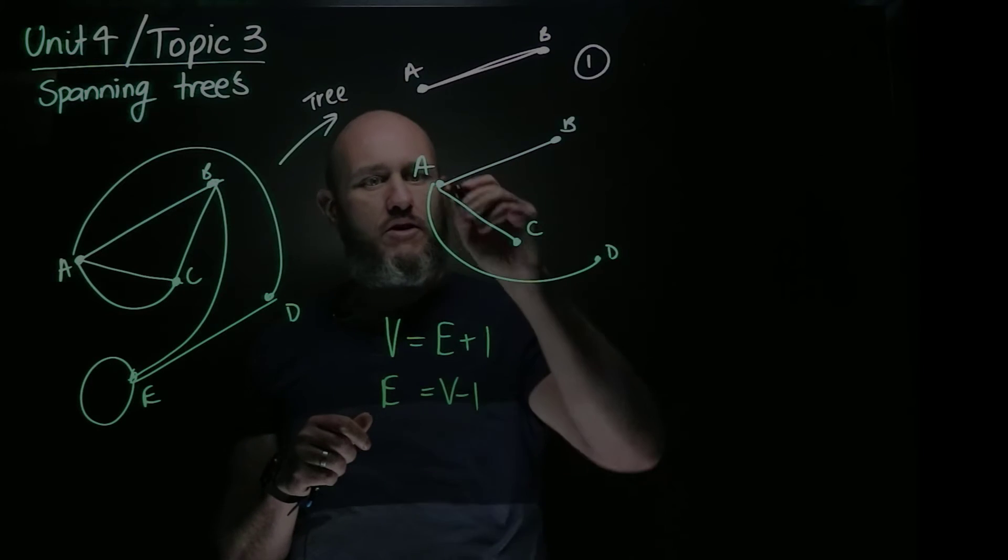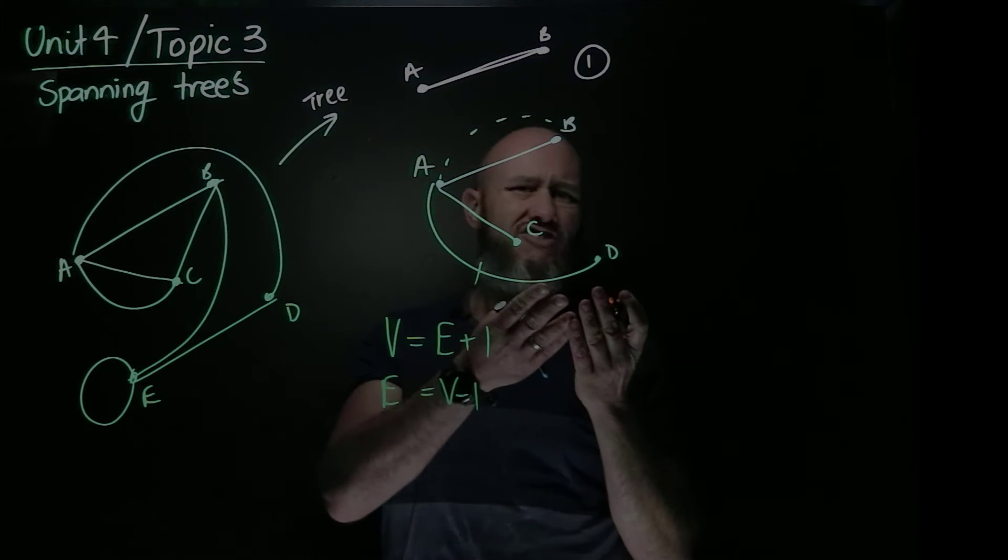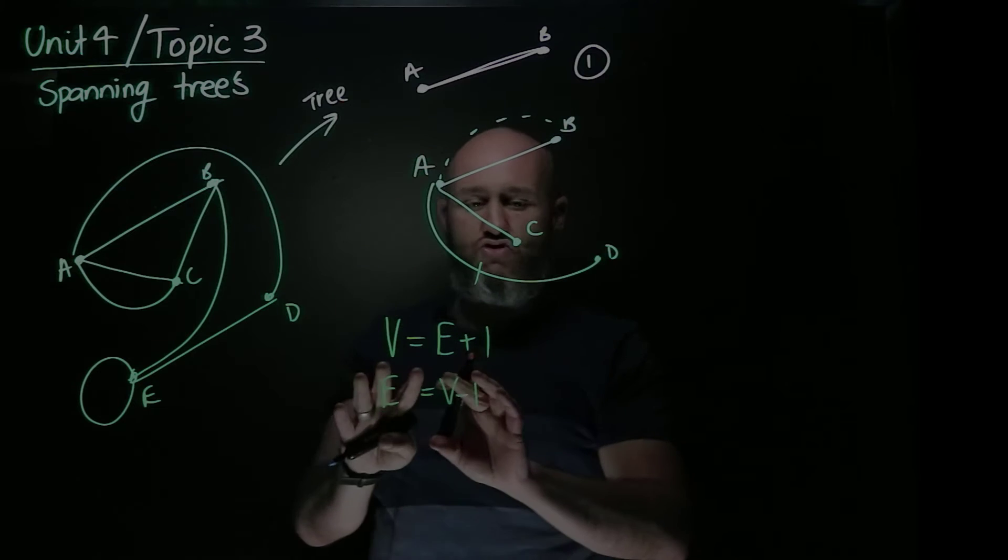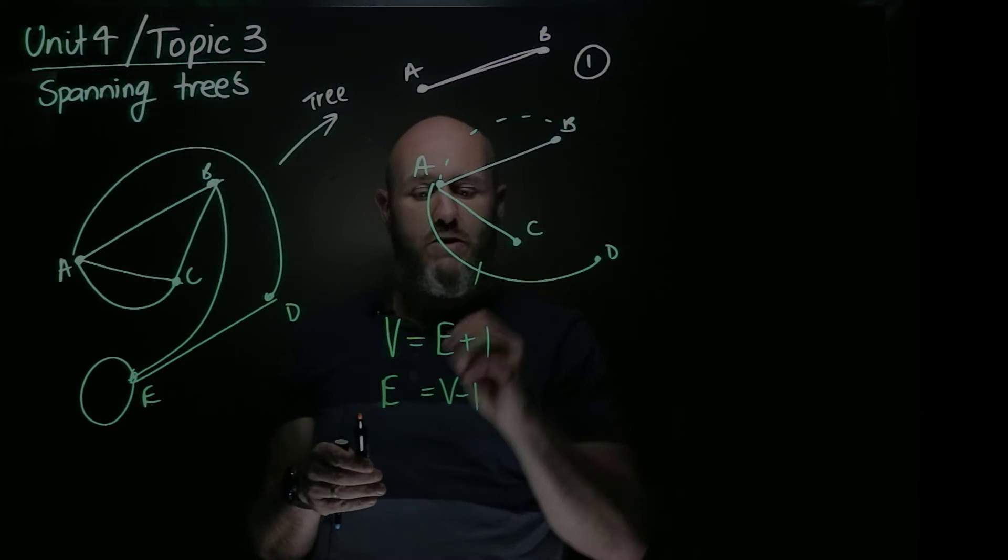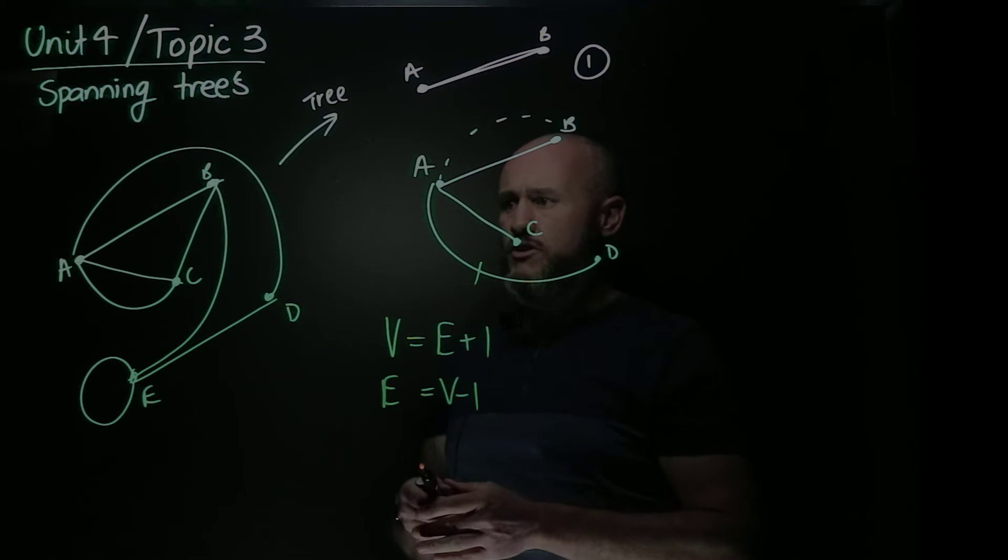Of course, I have to be careful. It's not always the case. I could remove this edge and add that one in, and then I've got a disconnected tree with a multiple edge and a cycle. So that doesn't quite work. But this is true. The number of edges for a tree will be one less than the number of vertices. So there's trees and a reminder of what trees are.